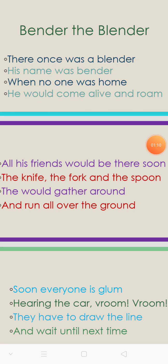Now I explain this rhyme. There once was a blender, his name was Bender. When no one was home, he would come alive and roam.